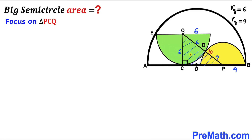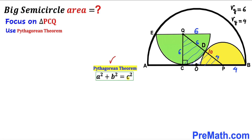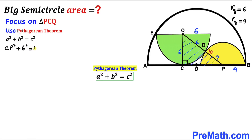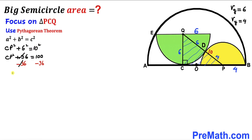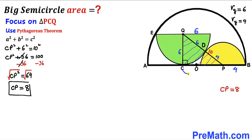Now let's focus on right triangle PCQ and apply the Pythagorean theorem: a² + b² = c². The hypotenuse is PQ = 10, one leg is CQ = 6, and the other leg is CP. So: CP² + 6² = 10², which gives CP² + 36 = 100. Subtracting 36 from both sides, CP² = 64. Taking the square root, CP = 8 cm.